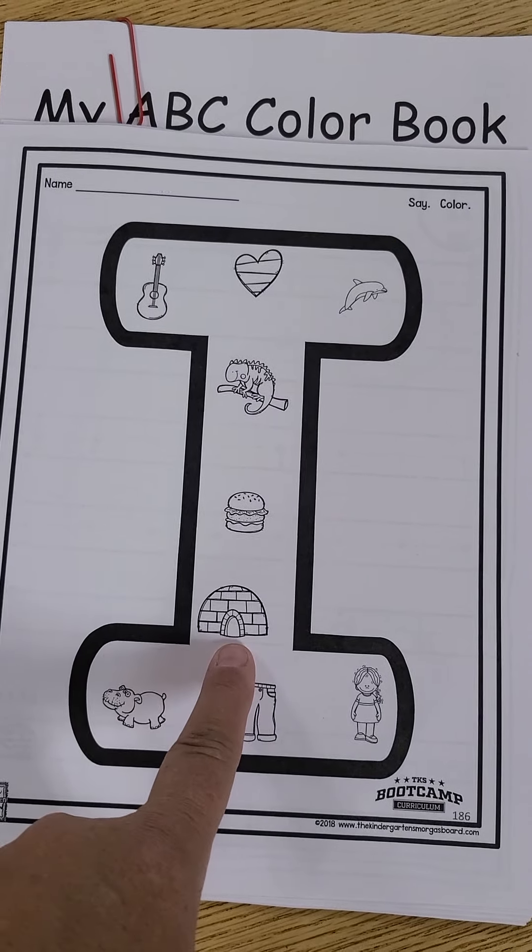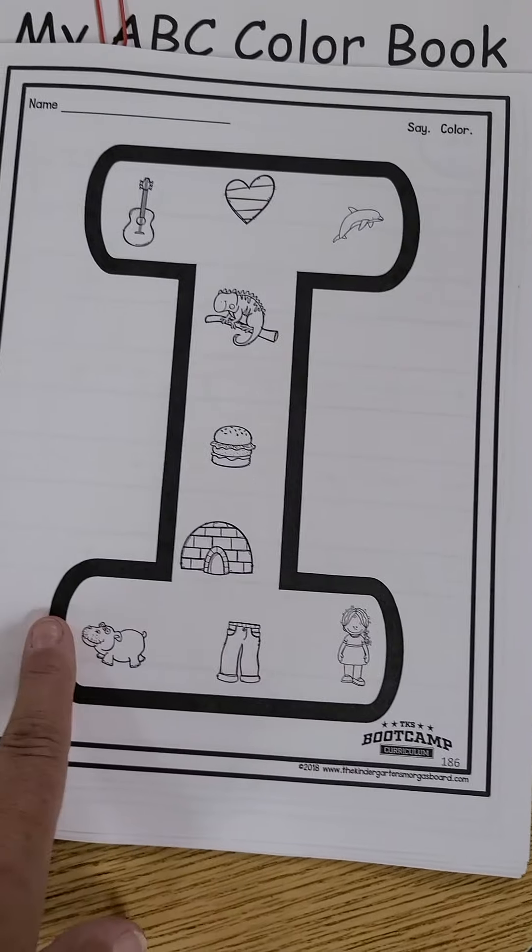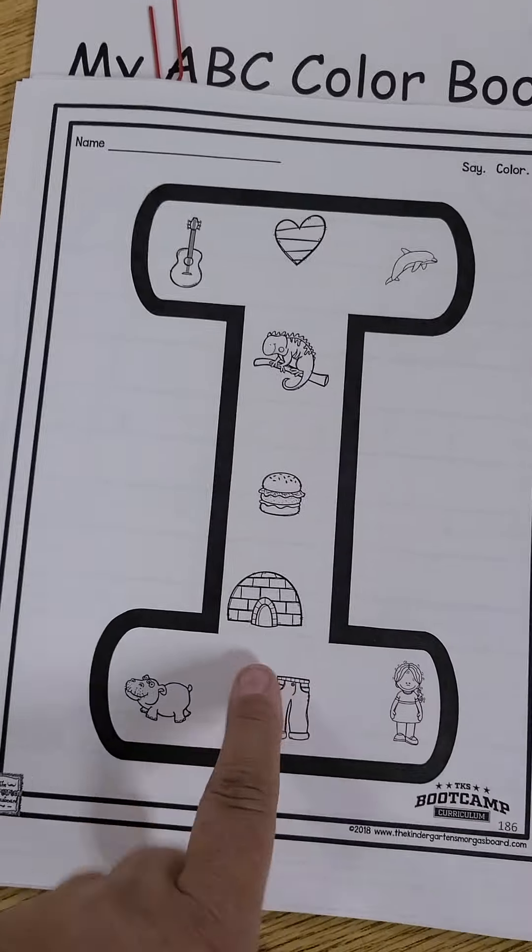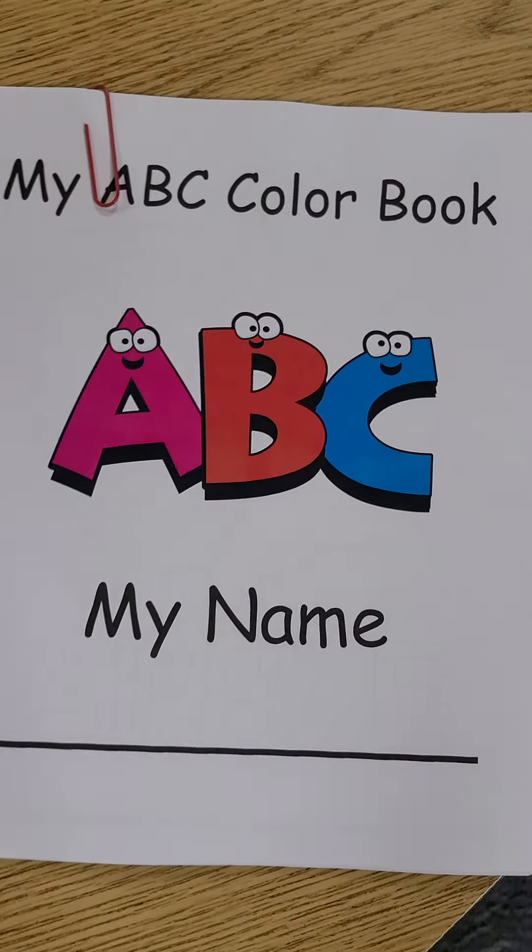like igloo, you would color it. Go ahead and practice coloring in the background of the letter. So in this case, you would color all of that letter I. Let's see what that would look like.